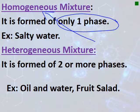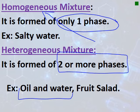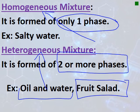A heterogeneous mixture forms two or more phases. For example, oil and water are called immiscible liquids — they do not mix, forming two phases separated by density. Fruit salad or vegetable salad also forms a heterogeneous mixture because it has two or more phases. So mixtures are classified as either homogeneous or heterogeneous. Thank you, bye bye.